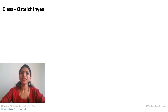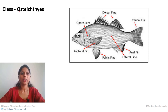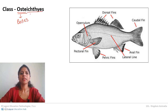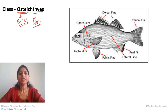Osteichthyes is a class of super class Pisces, so it includes fish. The word 'Osteo' means bones, and 'ichthyes' represents fish. So Osteichthyes means bony fish — all bony fish are included in this class.